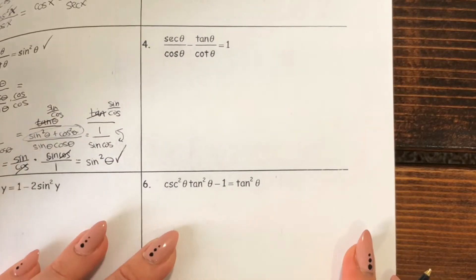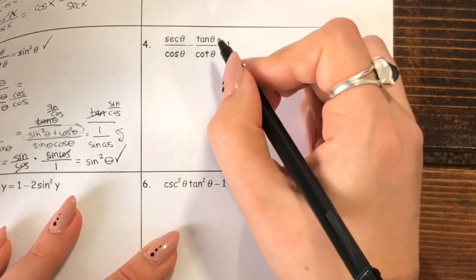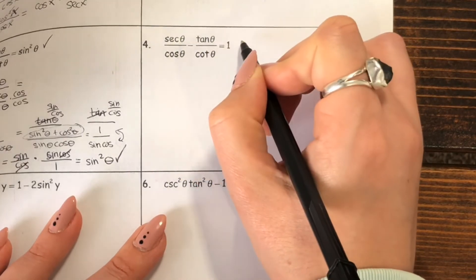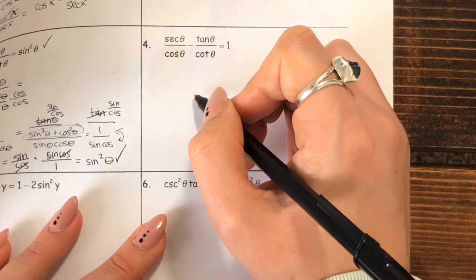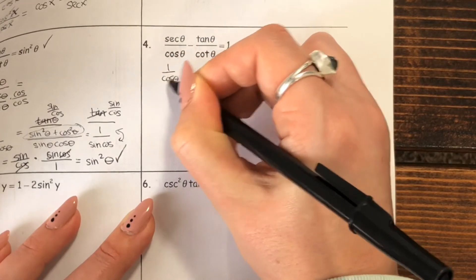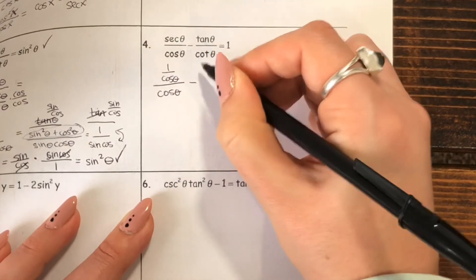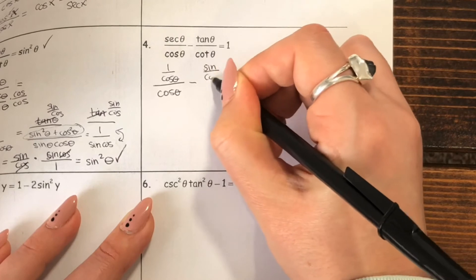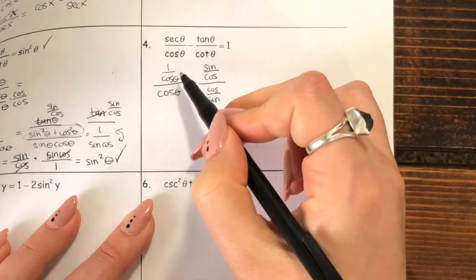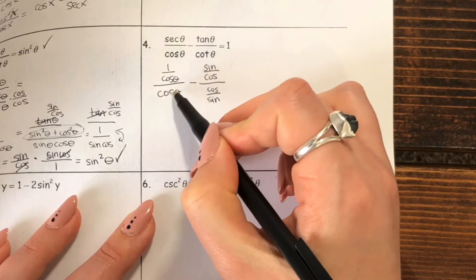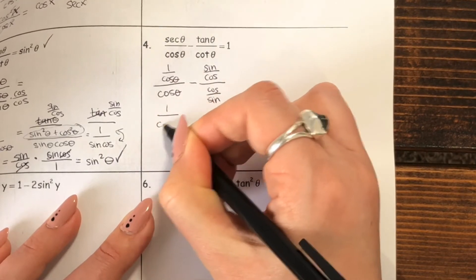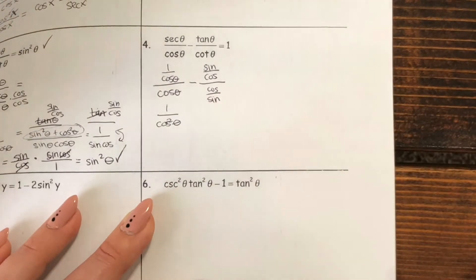Let's do one more. On this one we have secant over cosine minus tangent over cotangent — that's definitely the trickier side compared to one. What I would do is switch your secant: we know secant is one over cosine, over cosine. And then tangent I would switch into sine over cosine, and cotangent is cosine over sine. When you have a fraction just divided by one thing, it's the same as multiplying those together — so one over cosine divided by cosine is the same as one over cosine squared.